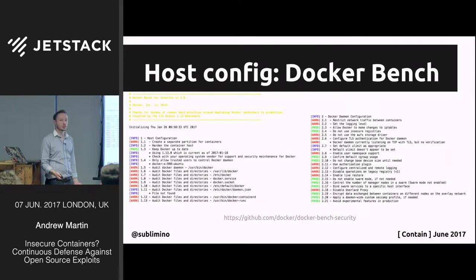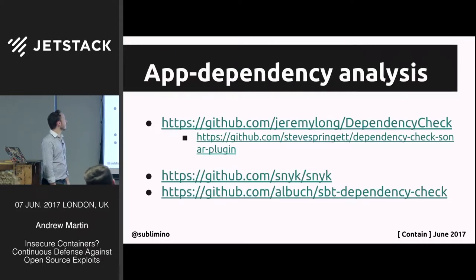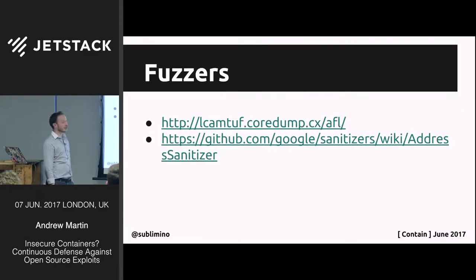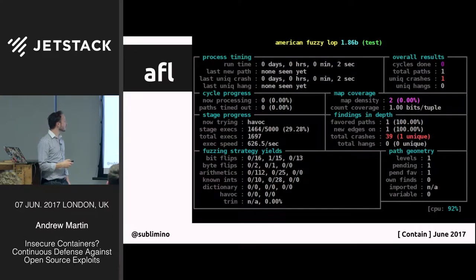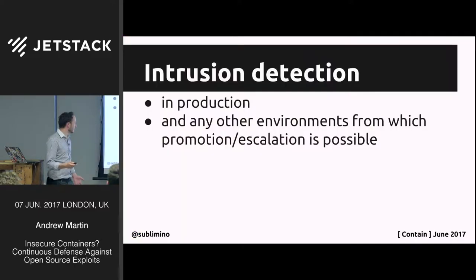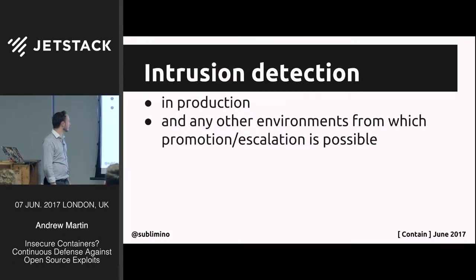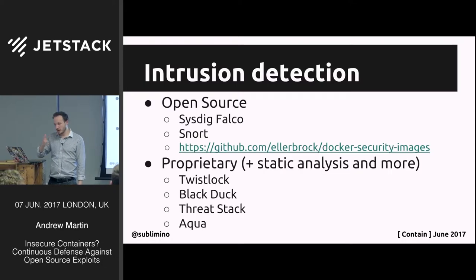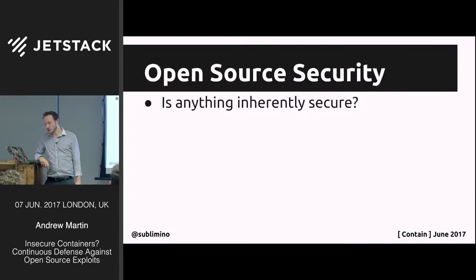Docker Bench Security deserves a mention — an open source tool that lets you identify the state of your host: have I left anything open that I shouldn't have? It checks conformance to best practices per the vendor, and does dependency analysis for your applications. Snyk will actually generate pull requests for you for insecure or transitive dependencies — a magical tool. AFL, the fuzzer, I really recommend visiting their homepage and looking at the list of scalps they've taken — they've basically broken everything. We have to use intrusion detection systems because despite all these layers, things will get broken into.